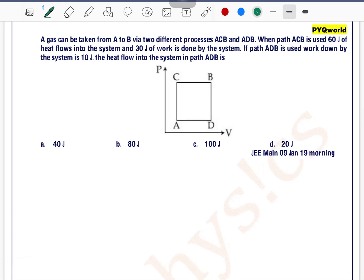A gas can be taken from A to B via two different processes ACB and ADB. The initial point is A and the final point is B. There are two paths, one is ACB and another is ADB.